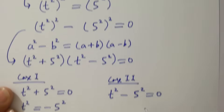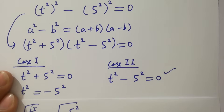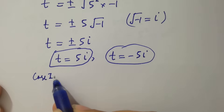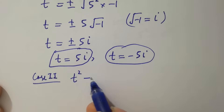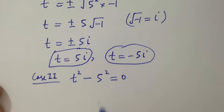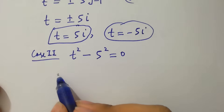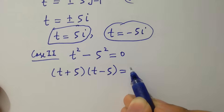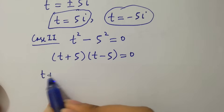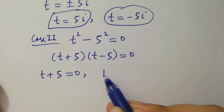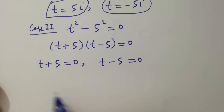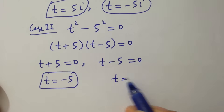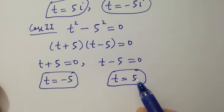From the second case, t squared minus 5 squared equal to 0. Applying the formula a squared minus b squared equals a plus b times a minus b, we get t plus 5 times t minus 5 equal to 0. Either t plus 5 equal to 0 or t minus 5 equal to 0, giving t equal to minus 5 and t equal to plus 5 — our real solutions.